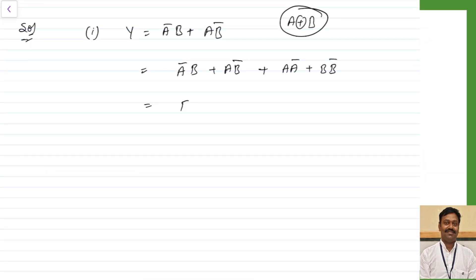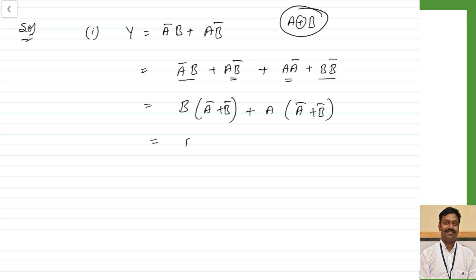I am adding A into A bar — we have seen that A into A bar equals 0 and B into B bar also equals 0, using the AND law. Now I can take B common between these terms, so this becomes B into A bar plus B bar. Similarly I can take A common, which again gives A bar plus B bar, and as per De Morgan's law A bar plus B bar becomes AB bar.